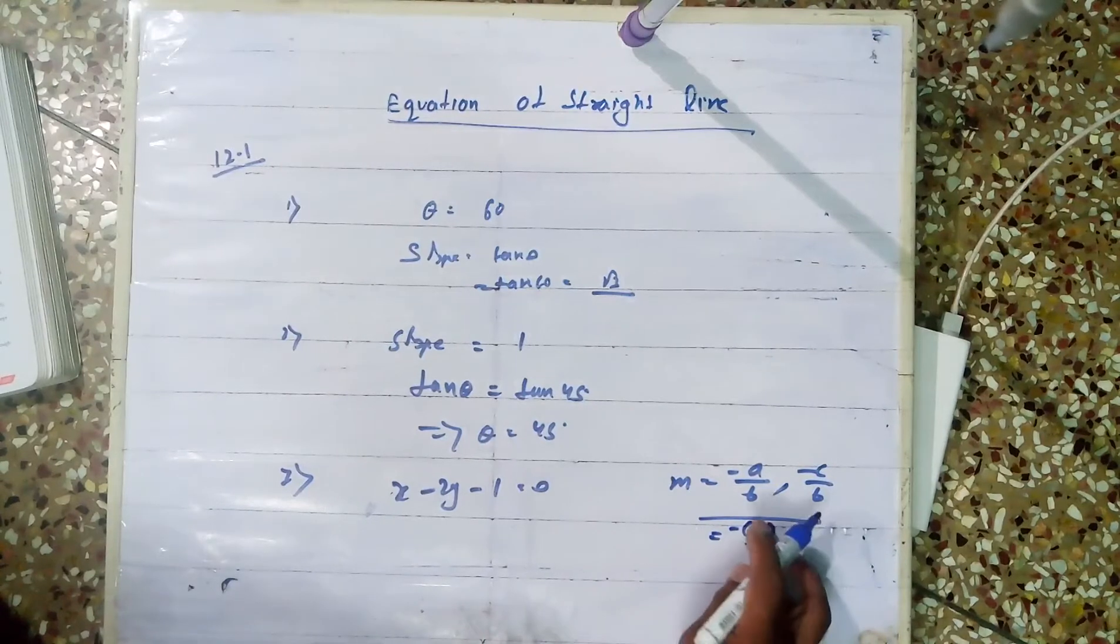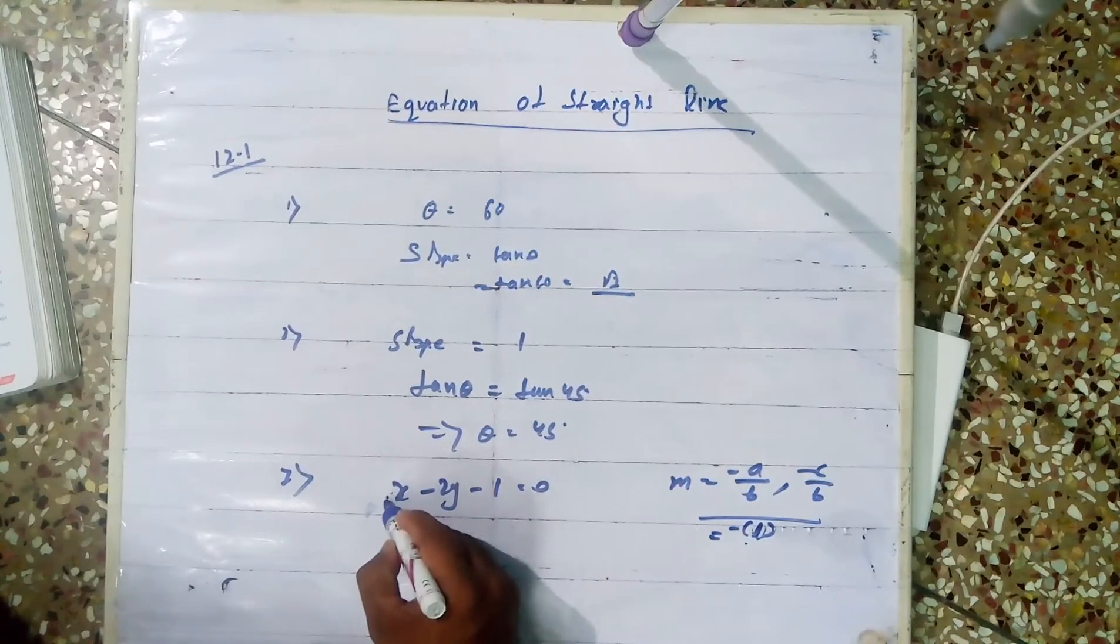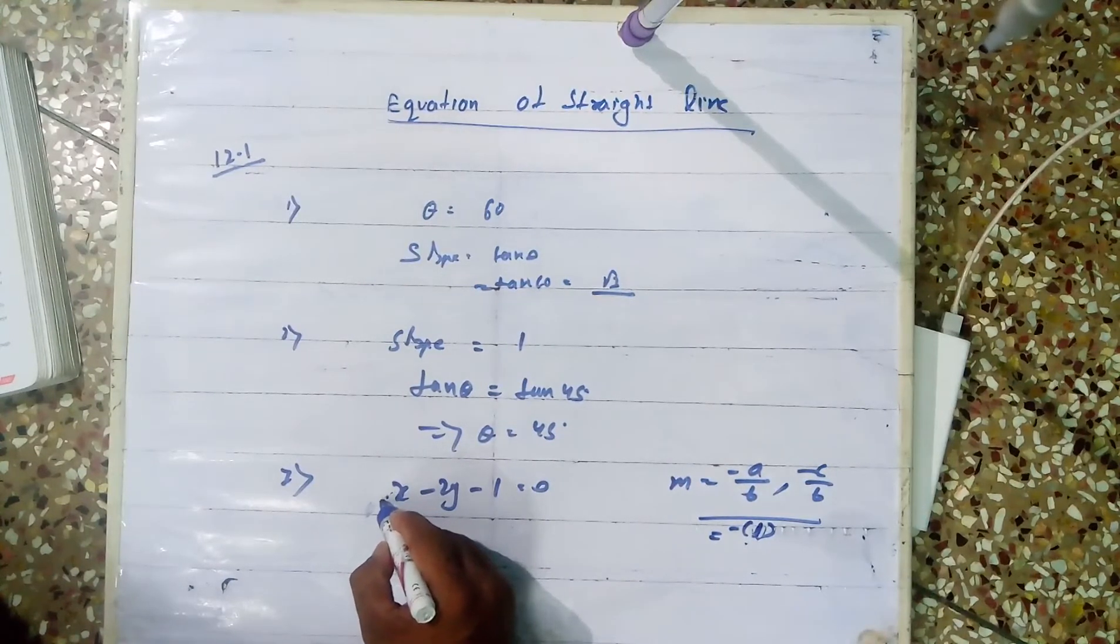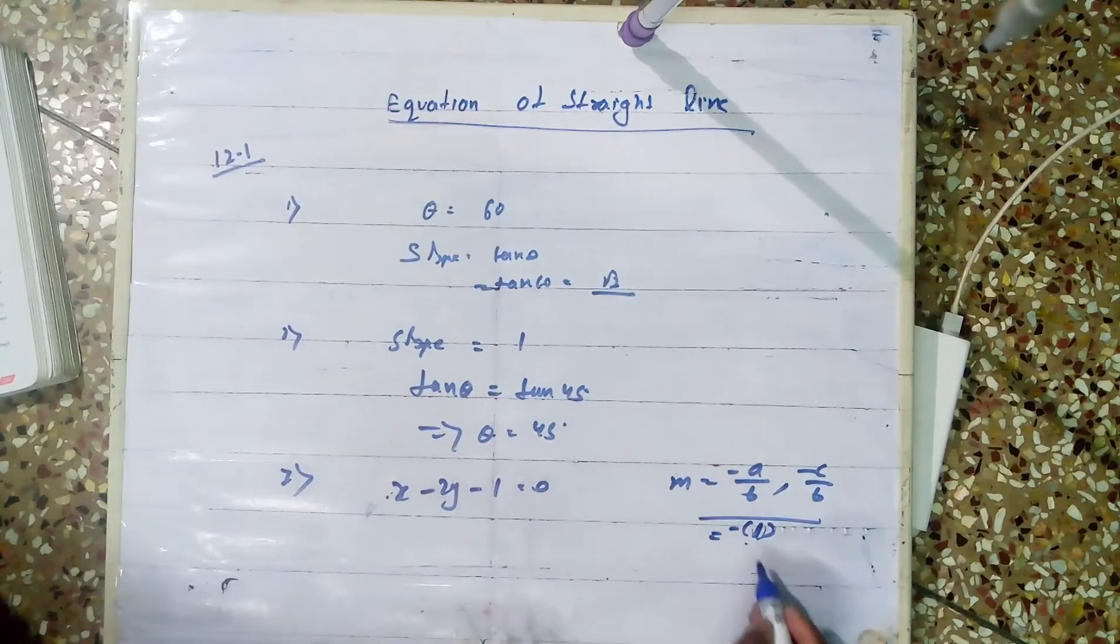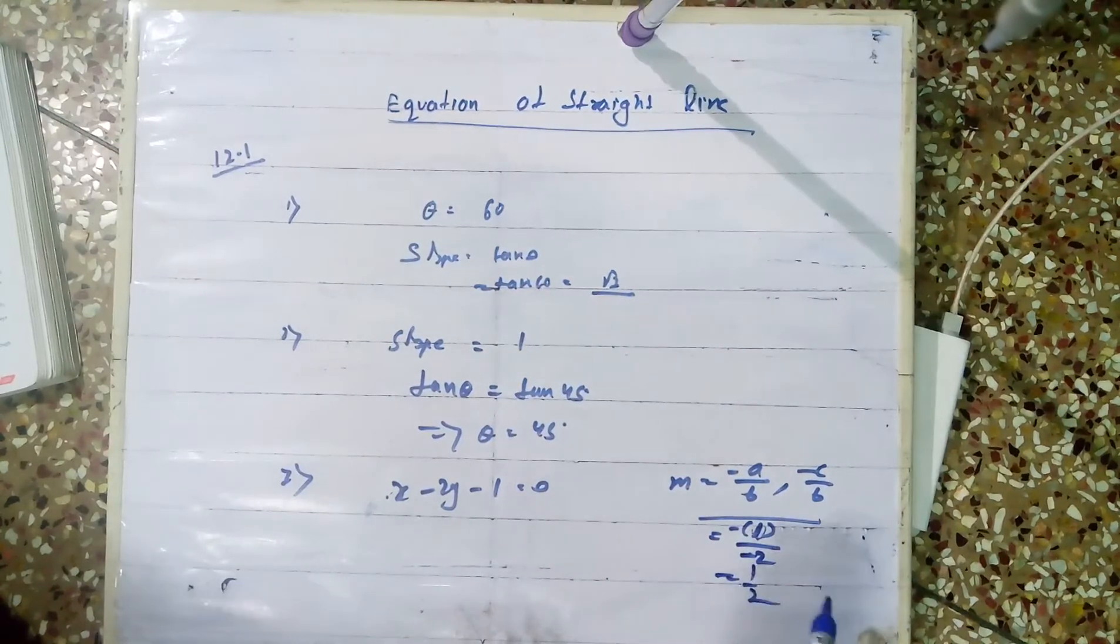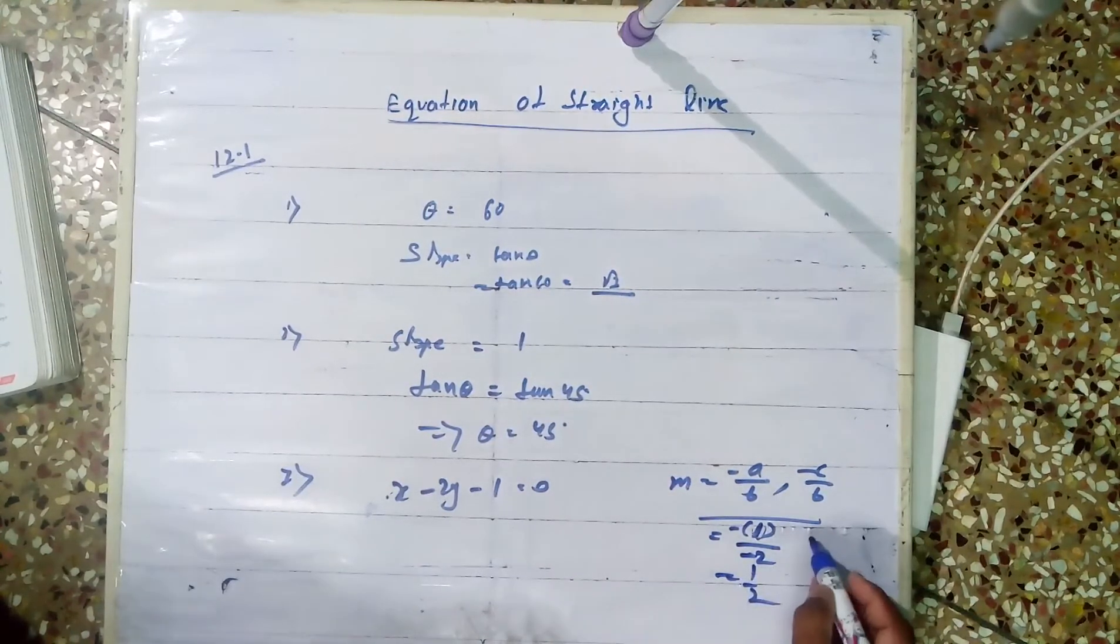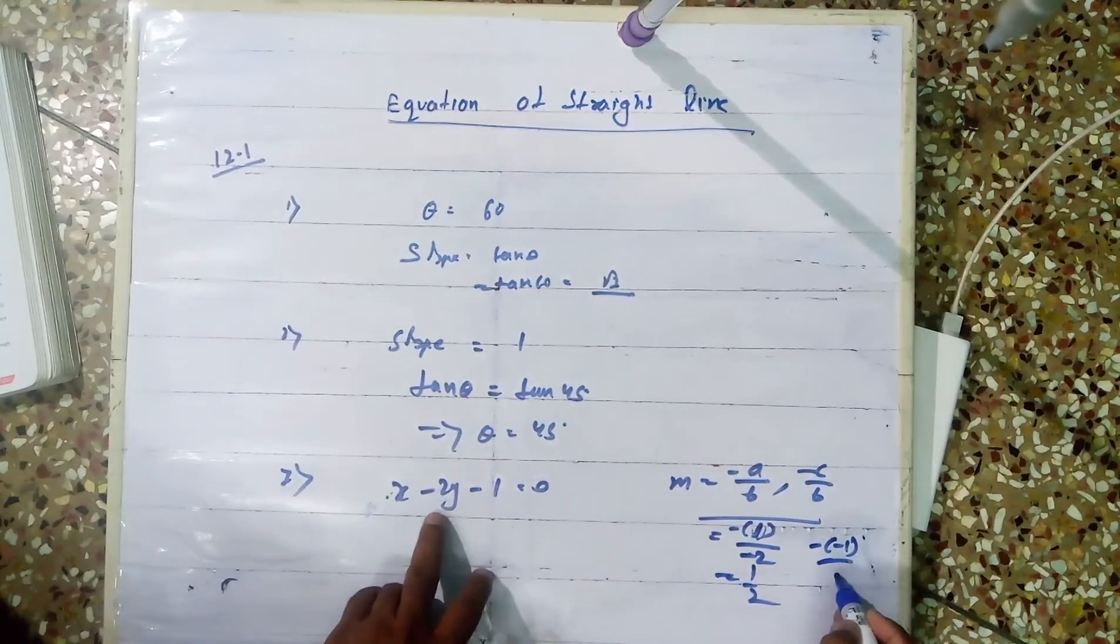Here, a is the coefficient of x, b is coefficient of y, c is the constant. So a is 2, b is -2. Slope is minus a by b, that's minus 2 by -2, which equals 1. Y-intercept is minus c by b, that's minus (-1) by (-2), which equals -1/2.